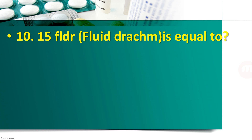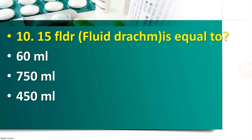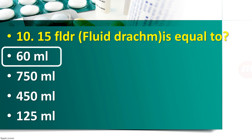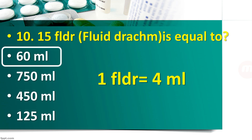Question number 10: 15 fluid drachm is equal to — 60 ml, 750 ml, 450 ml, or 125 ml? The right answer is 60 ml. Because 1 fluid drachm is equal to 4 ml, so 15 fluid drachm is equal to 60 ml. 15 into 4 gives you the answer 60 ml.